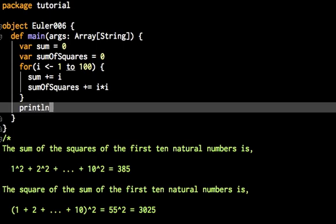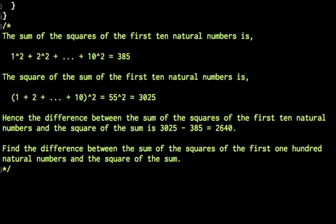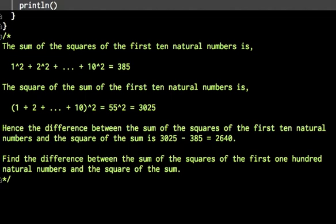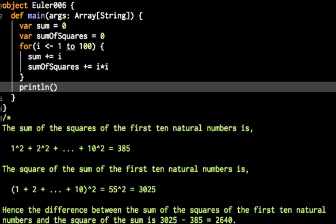And in the end, we want to print out the result, which is... Let me look it up. The difference between the sum of squares minus the square of the sum. So sum of squares is that, minus the square of the sum. And that should be the solution. Let me compile this quick.